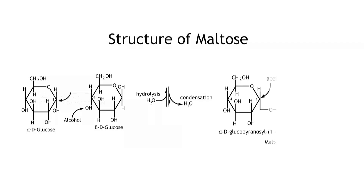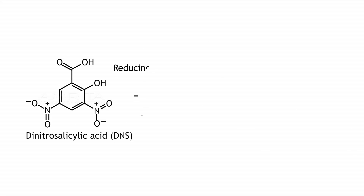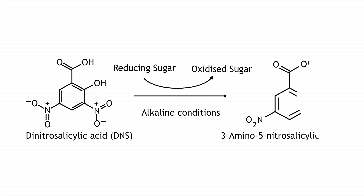Maltose is a reducing disaccharide. Maltose reduces the alkaline solution of 3,5-dinitrosalicylic acid (DNS), which is pale yellow, into an orange-red complex of 3-amino-5-nitrosalicylic acid.